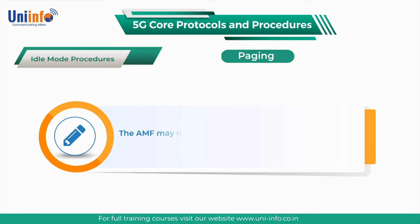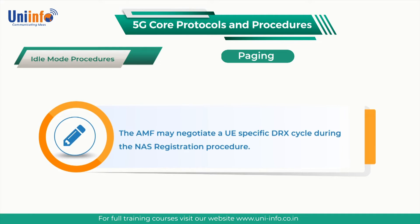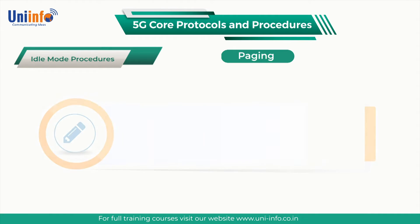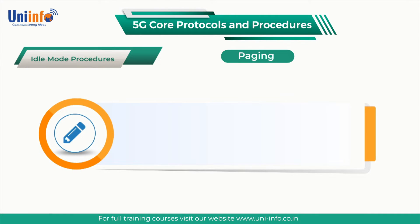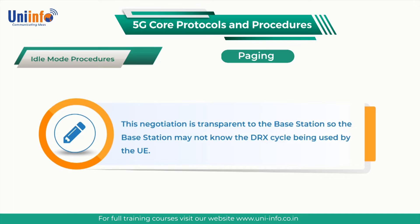The AMF may negotiate a UE-specific DRX cycle during the NAS registration procedure. This negotiation is transparent to the base station, so the base station may not know the DRX cycle being used by the UE.